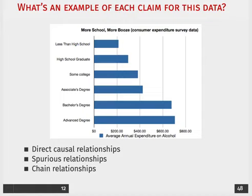We can also think of a chain relationship. In this context it's a little harder to think through, because essentially a chain relationship would require some way to randomize the type of education that someone receives — which would be a pretty extreme government intervention. That's essentially what a chain relationship is: some variable that describes the application of the treatment, in this case the degree someone receives, and it cannot be associated with the outcome — how much someone spends on alcohol in a given year.